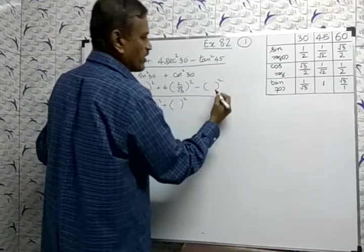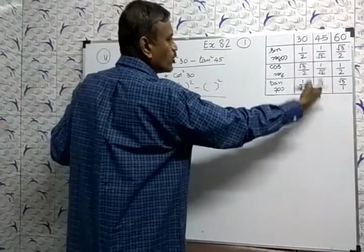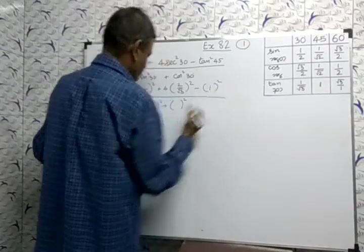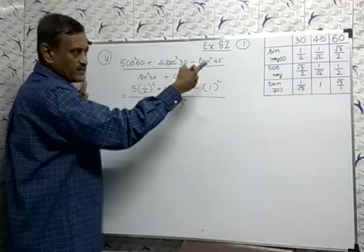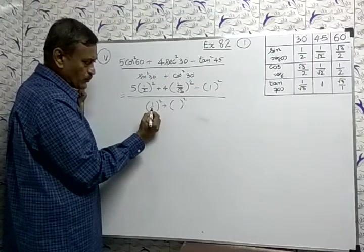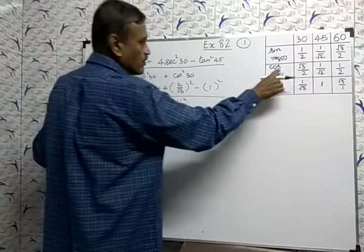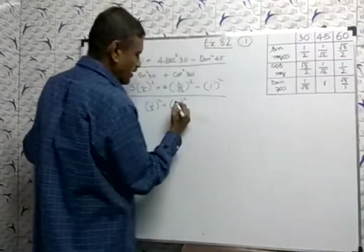Tan 45, equal to 1. Sin 30, is 1 by 2. Cos 30, is root 3 by 2.